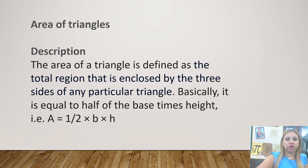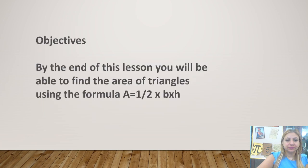We are going to learn about area of triangles. The area of a triangle is defined as the total region that is enclosed by three sides of any particular triangle. Basically, it is equal to half of the base times height. By the end of this lesson, you will be able to find the area of triangles using the formula: area equals half times base times height.